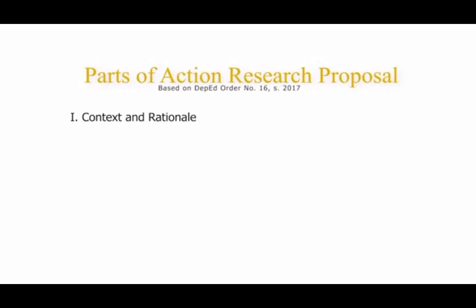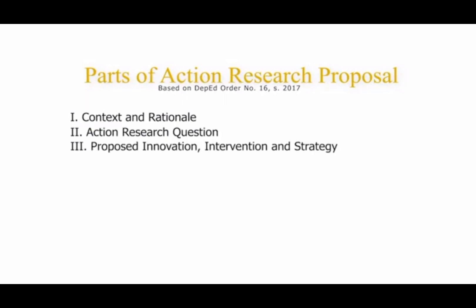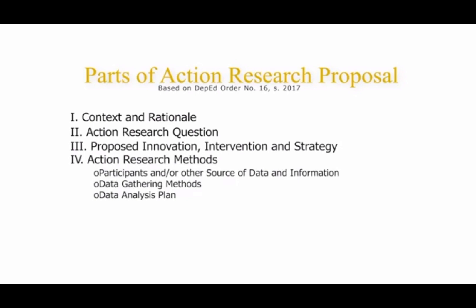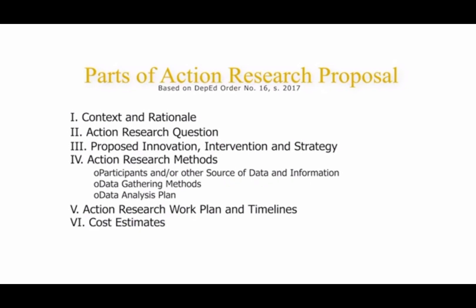Parts of your action research proposal: First, context and rationale. Second, action research question. Third, proposed innovation, intervention and strategy. Fourth, action research methods — which include participants and/or other sources of data and information, data gathering methods, and data analysis. Fifth, action research plan and timelines. Sixth, cost estimates. Seventh, plans for dissemination and utilization. And the last part is references.